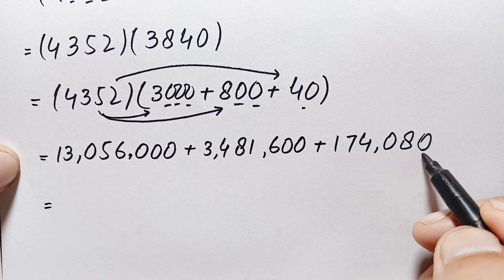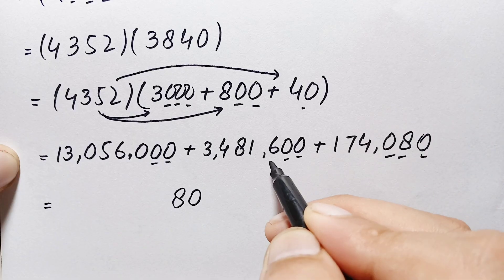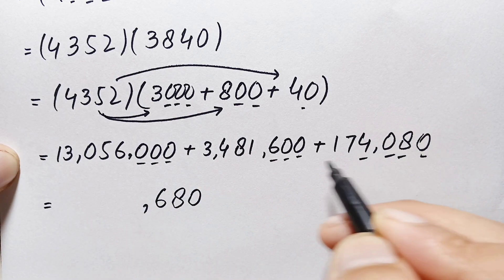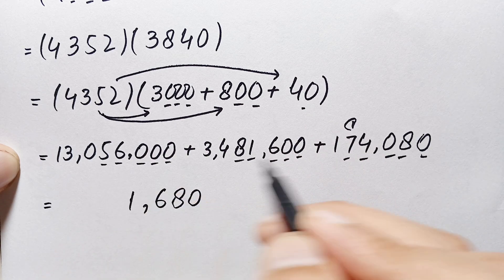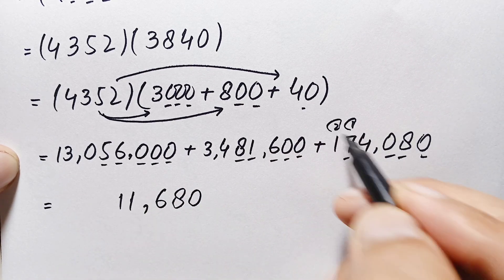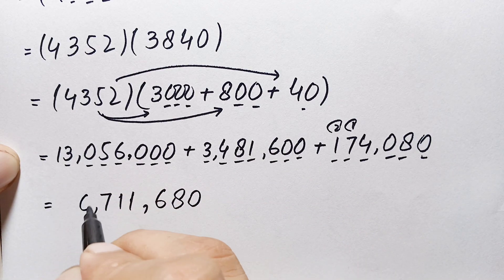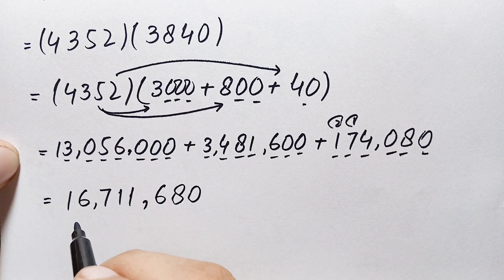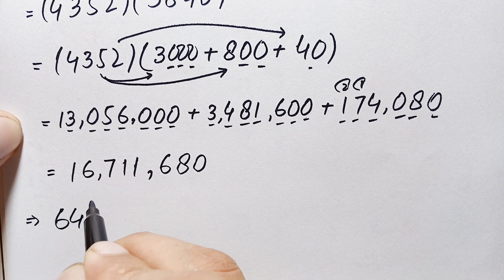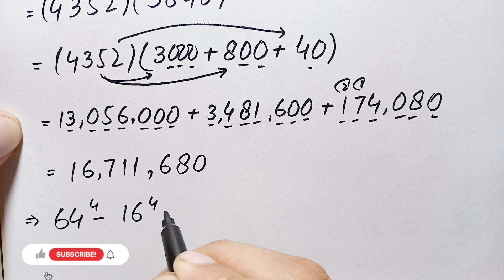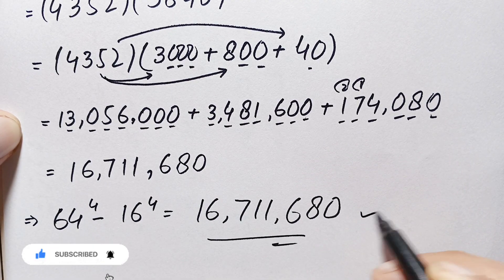Now finally we add these three numbers: 13,056,000 + 3,481,600 + 174,080. Adding column by column: 0+0+0=0, 0+0+8=8, 0+6+0=6, 6+1+4=11 carry 1, 5+8+7+1=21 carry 2, 0+4+1+2=7, 3+3+0 ... gives 16,711,680. So the final value of 64^4 - 16^4 is 16,711,680.